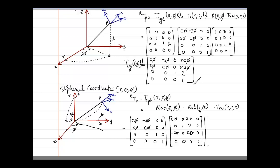The third operation is translatory with respect to R. There is no orientation change, so it is an identity matrix with a scaling factor of 0 and only translation in the Z direction — that is R — giving the last entry as 1.